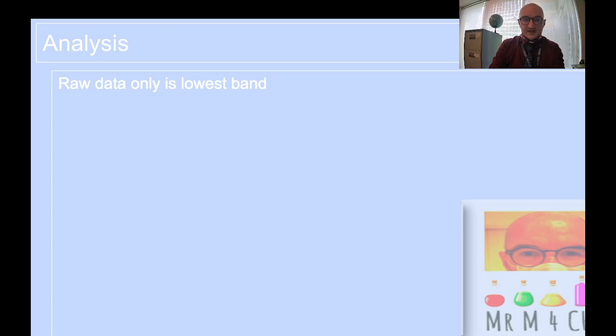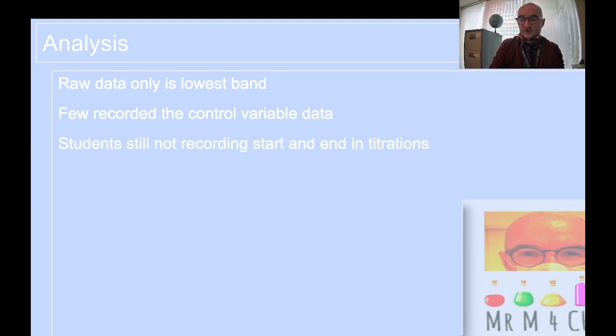Moving on to analysis. If you're only plotting raw data too many times to see just time plotted or just temperature plotted, you're only going to get one or two. It doesn't matter how beautifully you've done your uncertainties. It doesn't matter how beautiful your graph is. If it's raw data, two is the maximum mark you're going to get. Very few record the control variable data. This is, I've said this two or three times already in this video. I've seen it in two different videos previously. Basically, have a table recording the control variable data.